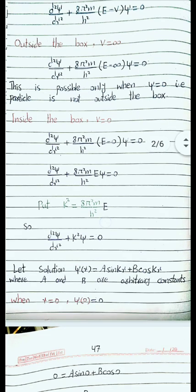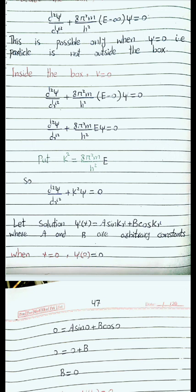We let k² = 8π²mE/h², in order to write the equation in the standard form of a second-order differential equation. Substituting, we get: d²ψ/dx² + k²ψ = 0. This is a second-order differential equation.